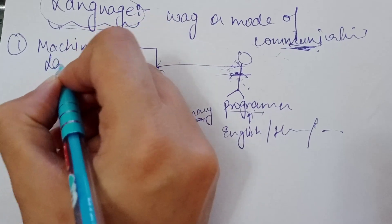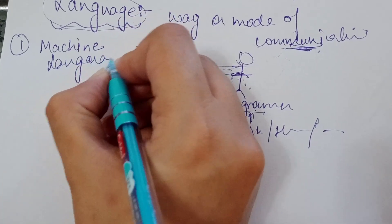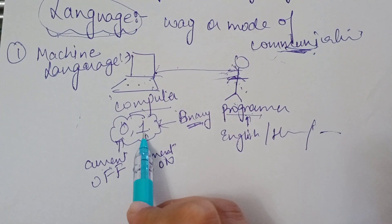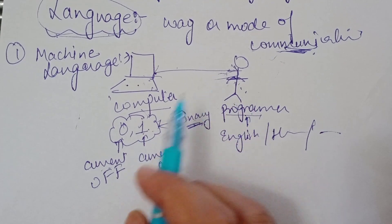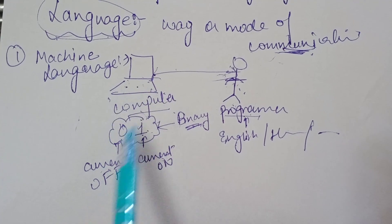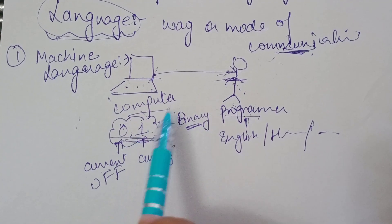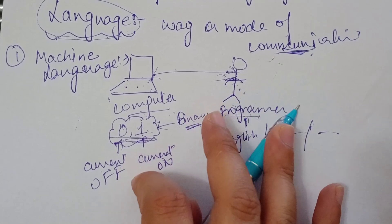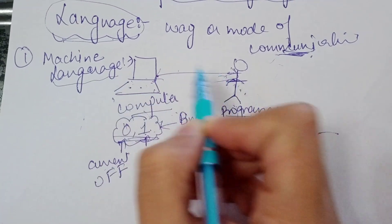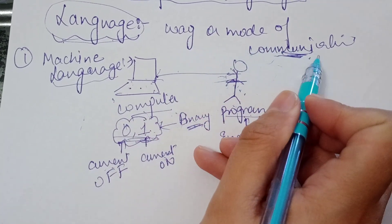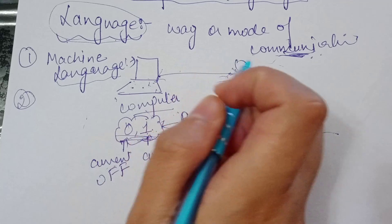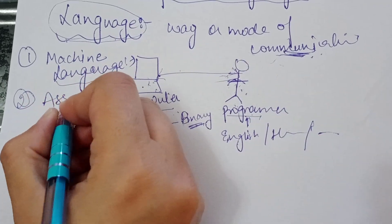Machine language is used for communication between the computer and the programmer. In this case the programmer learns the computer's language, and whatever the programmer wants to write is converted into binary — 0s and 1s. Computer input is 0s and 1s and computer output is 0s and 1s, so the programmer had to convert everything into that form. There was a lot of problem in this case because it is a long series of 0s and 1s, there are chances of error, and learning this was very tedious. So the second thing is assembly language.